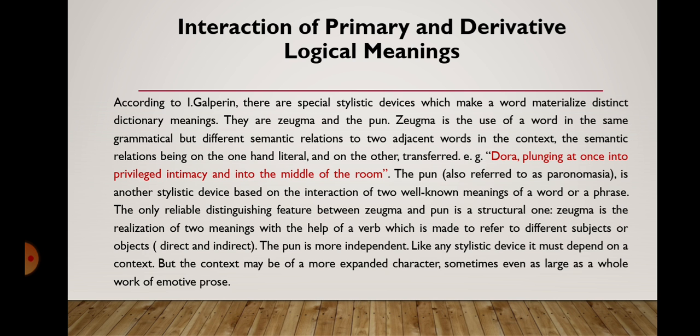As it is known, the word is, of all language users, the most sensitive to change. Its meaning gradually develops, and as a result of this development, new meanings appear alongside the primary one. It is normal for almost every word to acquire derivative meanings. Sometimes the primary meaning has to make way for a quite new meaning which ousts it completely. According to Galperin, there are special stylistic devices which make a word materialize distinct dictionary meanings. They are zeugma and the pun.